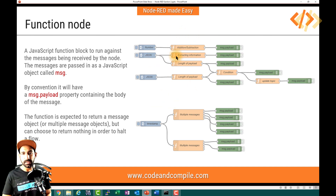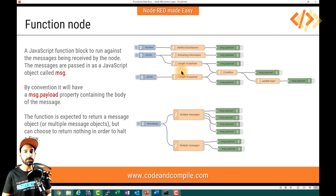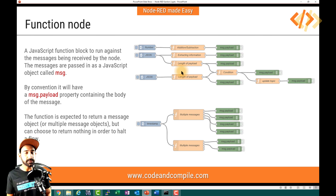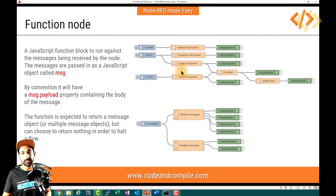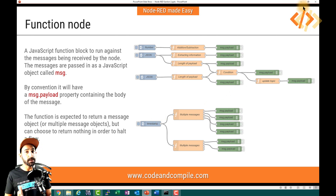The function node looks like this faded orange color. Inside it, you can write your program, your coding — how you want to deal with your inputs, your message, mathematical or string operations, splitting messages, or handling multiple messages. Everything happens in functions. For example, MySQL scripts are written in the function node, and OPC UA tag information is also written here. So this is a very important node you should know about.